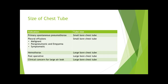Chest tubes come in a variety of sizes ranging from 6 to 40 French. Sizes are based on the circumference of the tube; the diameter equals the French size divided by 3 — for example, a 36 French is 12 millimeters in diameter. Small bore chest tubes are typically defined as 14 French or less, and large bore as greater than 14 French. Chest tubes can be straight or curled at the end; those curled at the end are called pigtail. The size selected depends on the type of intrathoracic collection being drained. Pneumothorax can be drained with small bore catheters, while draining blood or pus requires larger bore catheters.